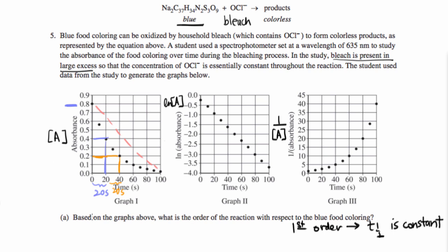And so the fact that half-life is constant, based on graph one, immediately tells us that our reaction is first order because our half-life is constant. We don't even have to look at any of the other graphs.